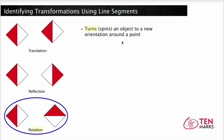Finally, a rotation is a transformation that turns — think spins — an object to a new orientation around a point. Spinning means the orientation is turned, but since the shape and size of the figure remains the same, the corresponding sides are still congruent. Finding the corresponding sides will depend upon how the figure is rotated; for example, the left side may be congruent to the bottom of the image.